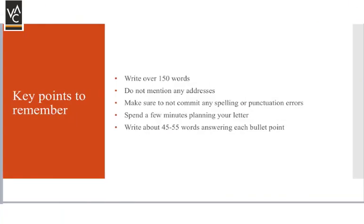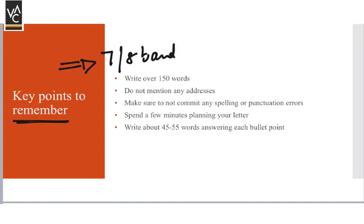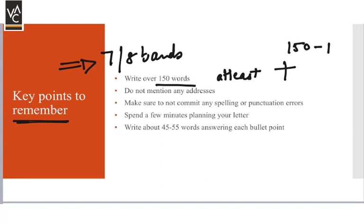Another thing to remember — these key points are very, very important for 7 or 8 band scores. You need to write over 150 words because the question says 'at least 150 words.' That means 150 or beyond. The ideal length is between 150 to 170 words.